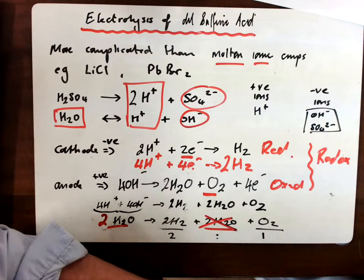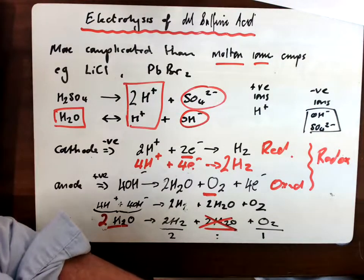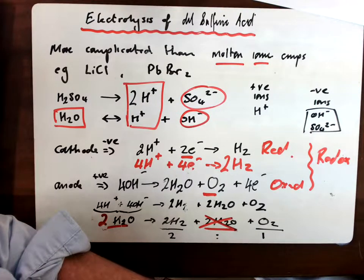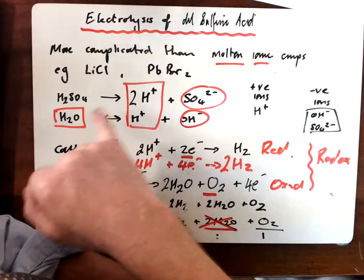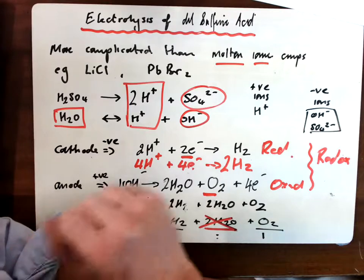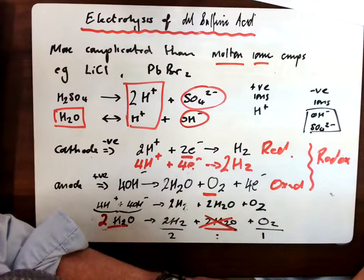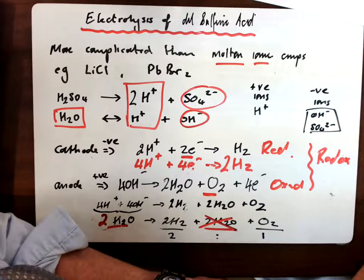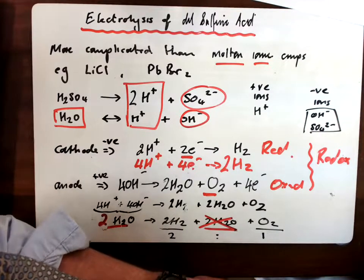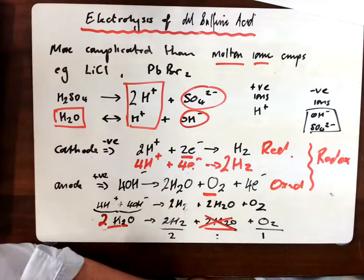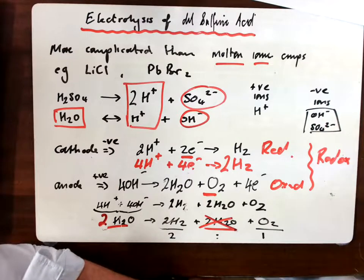I think that's pretty much it. That should cover all aspects of electrolysis of dilute sulfuric acid. So the only complication is now the presence of water, although it really only introduces one extra ion. And provided you've either learnt all the equations and you know the rule as to which ions are or are not discharged at those electrodes, you should be fine. Thank you.